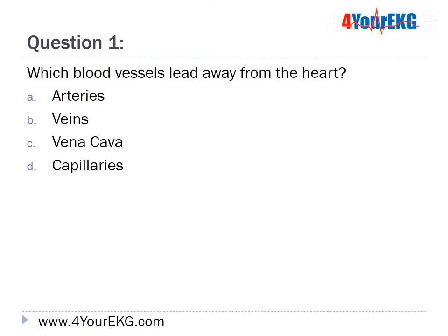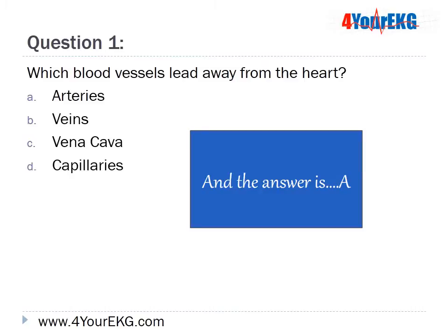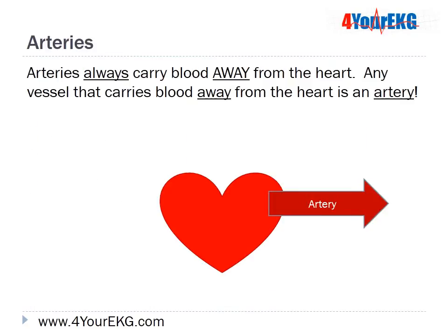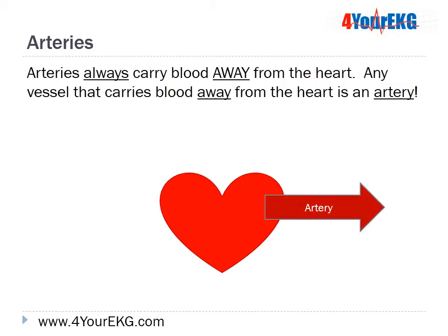Question 1: Which blood vessels lead away from the heart? A. Arteries, B. Veins, C. Vena cava, or D. Capillaries. The answer is A — Arteries. Arteries always carry blood away from the heart, so any vessel that carries blood away from the heart is going to be an artery.